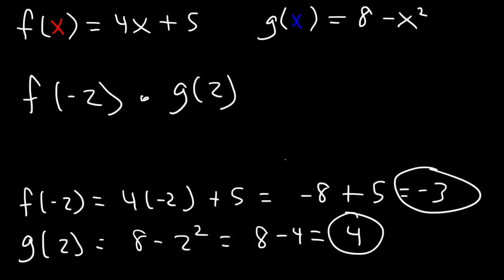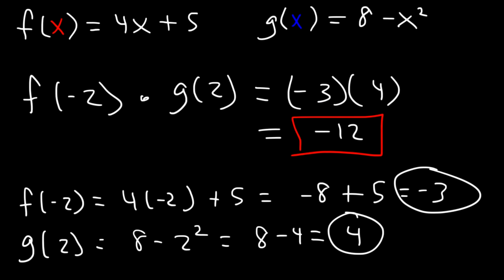So now that we have these two values, let's replace f of negative 2, which is negative 3. And let's replace g of 2 with 4. So negative 3 times 4 is negative 12. So that's the value of f of negative 2 times g of 2. So all you gotta do is simply find the values, and then multiply them.